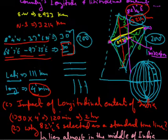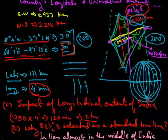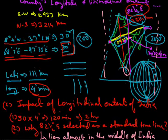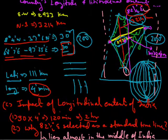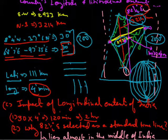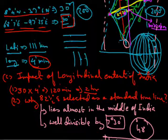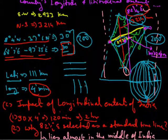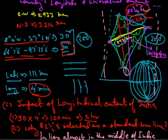For India, the 82 and a half degree line is the fixed time zone line that passes closest to the center of India, so we are fortunate and we select it as our Indian Standard Time. Another line goes from the west and another from the east, so it is not possible to select those. For example, Sri Lanka also chooses 82 and a half degrees as its standard meridian even though the line does not pass through the center of Sri Lanka.